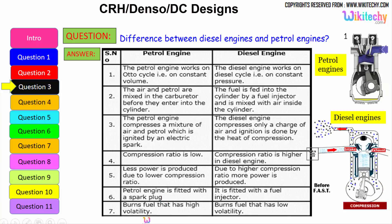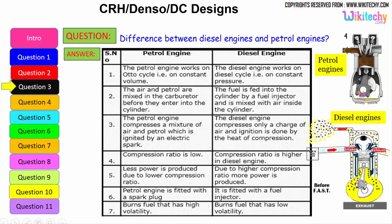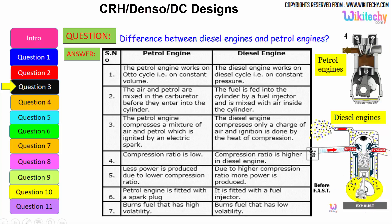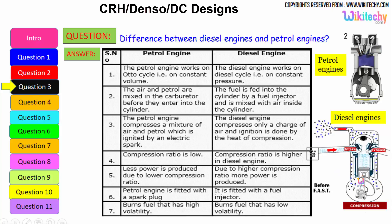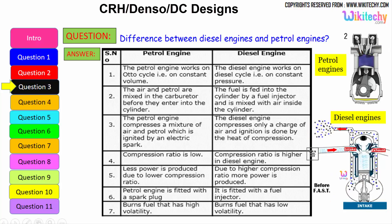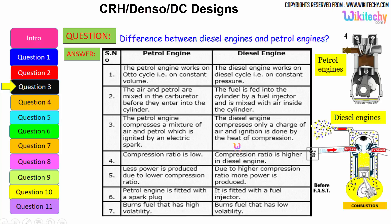The petrol engine burns fuel with high volatility — petrol is highly volatile — whereas the diesel engine burns low volatility liquid, as diesel is a low volatile liquid. These are some of the differences between the petrol engine and diesel engine.